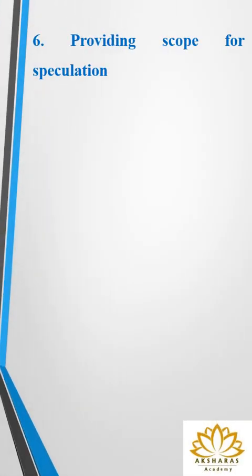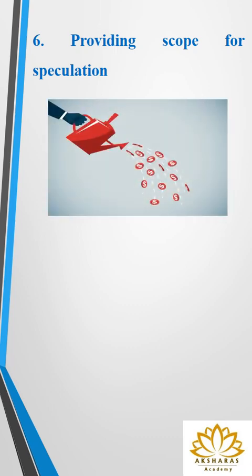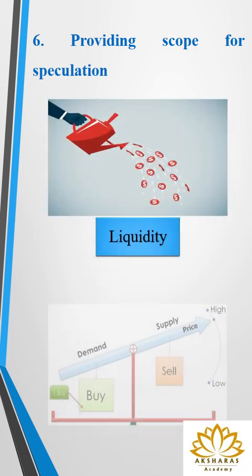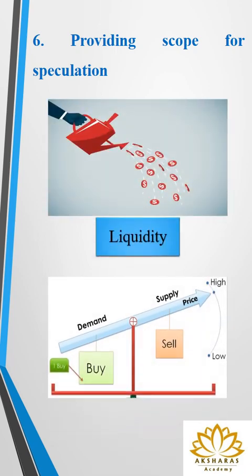The next function is providing scope for speculation. The stock exchange ensures securities' liquidity through demand and supply. Healthy speculation is permitted in the stock exchanges. Speculation takes advantage of the maximum fluctuations in the securities market. Financial instruments that carry high risk also have an expected higher rate of return. This is one of the functions of the stock exchange.